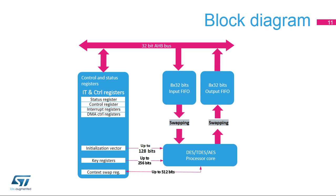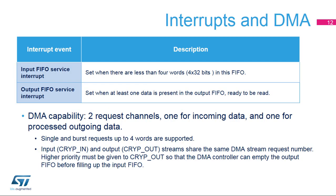The cryptographic processor block diagram is presented in the slide. The peripheral is composed of several hardware modules: the processor core responsible for one AES or DES block operation, input and output FIFOs connected to the bus interconnect, and a module that embeds control and status registers. Two functional interrupts are defined: one set when the input FIFO is ready to receive data, and one set when output data are ready to be flushed by the CPU or the DMA. The DMA has two streams plugged to the cryptographic processor, sharing the same channel number two. The output stream has higher priority than the input one.